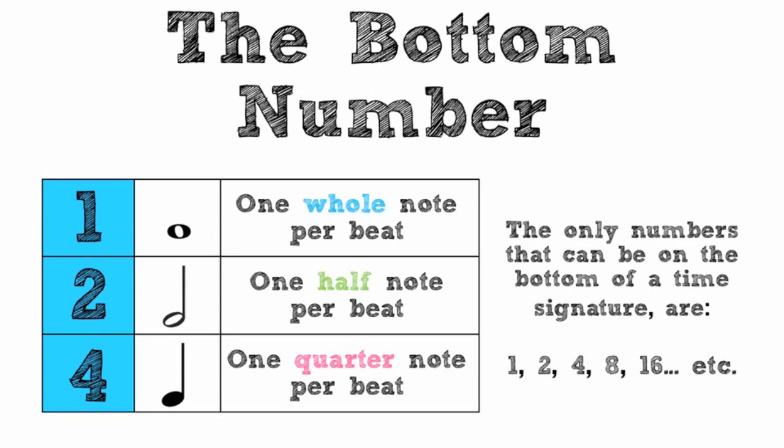The only numbers that can be on the bottom of a time signature are 1, 2, 4, 8, 16, and it can go on even further but it most likely doesn't. You can see that the pattern is just the numbers doubling each time.